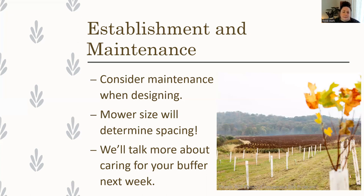We look at a 10-by-10 or 15-by-15 spacing, or some variation of those two numbers, as those fit most mowers. That usually ends up meaning we're looking at planting between 200 and 250 trees and shrubs per acre. That is not a hard and fast rule — you can go a little less than 200 per acre or plant more densely — but it's all about how you're going to maintain that buffer, keeping future maintenance in mind when thinking about spacing.